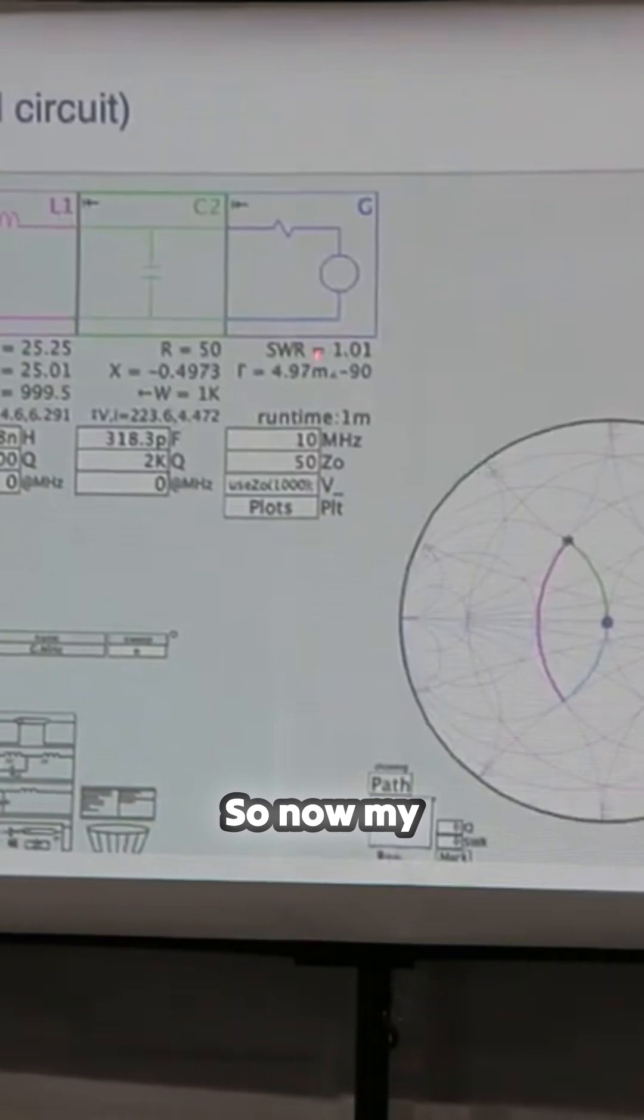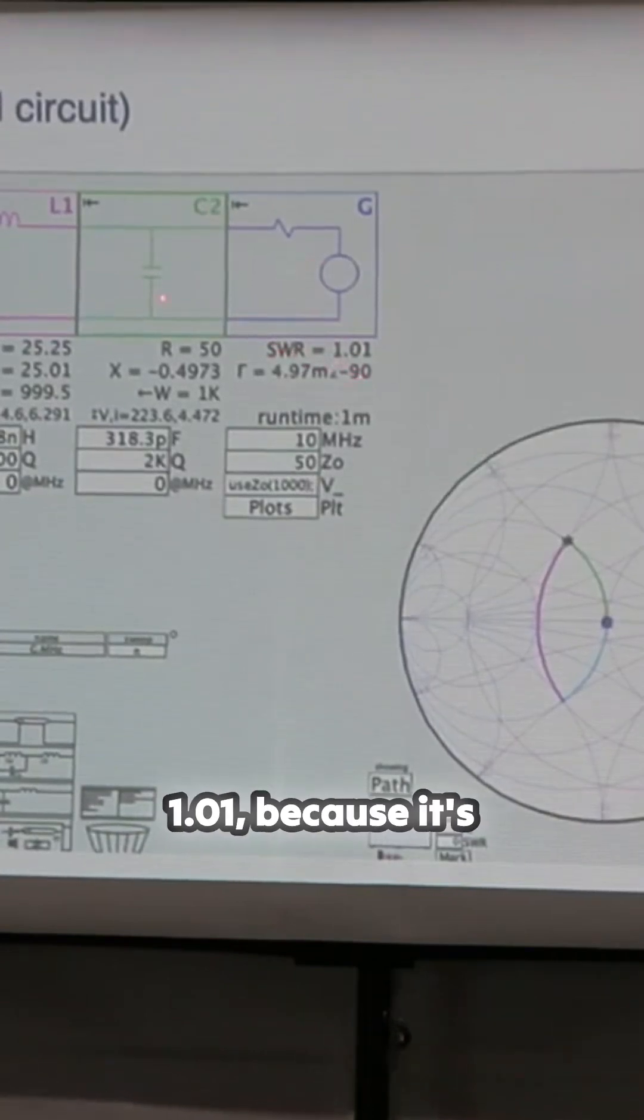And there it is. So now my transmitter is happy, my SWR is 1.01, because it's looking at a 50 ohm load.